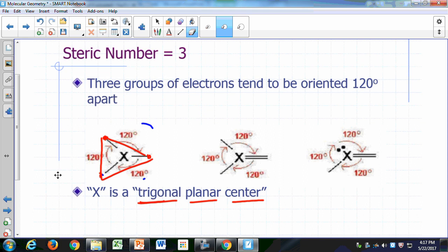So these are the different ways that this can happen. You can have three single bonds sticking out, you can have two single bonds and a double bond, a single bond, a lone pair, and a double bond, three groups, steric number of three.